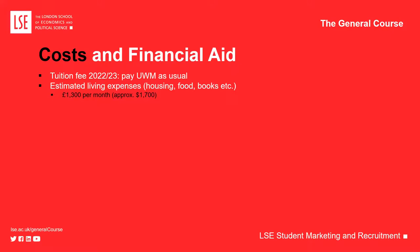Spending a moment on costs and financial aid: in terms of tuition fees, no change — you continue to pay your home institution tuition fee as usual and you're not paying anything directly to LSE. Living expenses we estimate at about £1,300 per month, approximately $1,700 per month. It is possible to live on that amount — budget carefully and that's quite a reasonable amount — but if you're going out clubbing every night or jetting off to Cannes and Rome every weekend, you'll very quickly spend more.